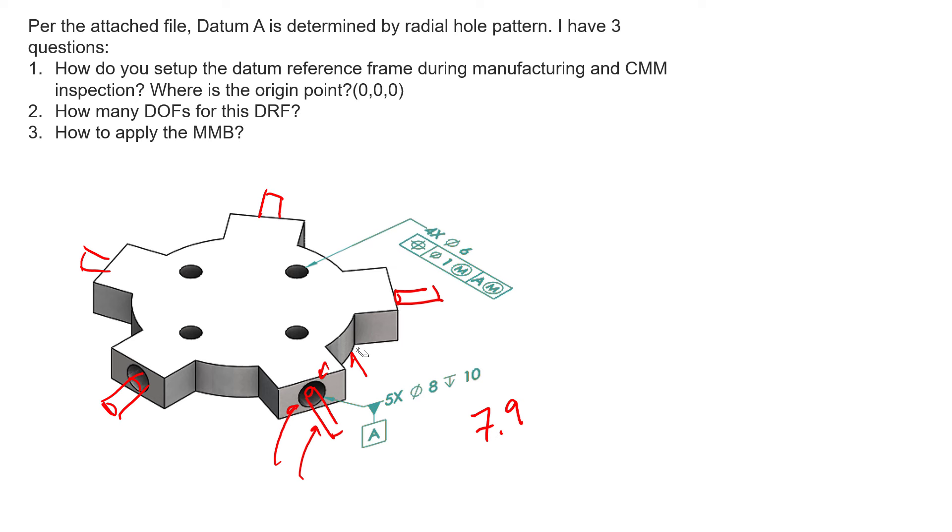That means this part can sort of rattle on all five of those pins. Now that rattle or that movement can be datum shift. We can shift this part a little bit on our datum simulator to get these features in tolerance. So these features get bonus tolerance based on the MMC modifier, but they also get a little bit of datum shift where we can shift the entire part to get them even closer to being in tolerance. That's how you apply the MMB and how the CMM or the fixed functional gauge is going to be interpreted. Hopefully that answers your question.